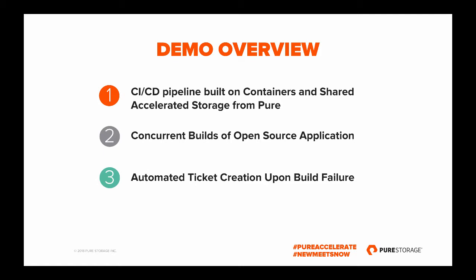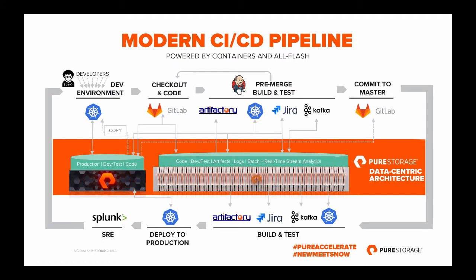We scale concurrent builds of an open source application to illustrate the parallelism that can be delivered with all-flash, and also showcase the integration with JIRA for automated ticket creation upon build failure. For developers, one of the first steps is how quickly they can gain access to a development environment, and that's delivered through Kubernetes containers so that developers can instantly get access to their development environments.